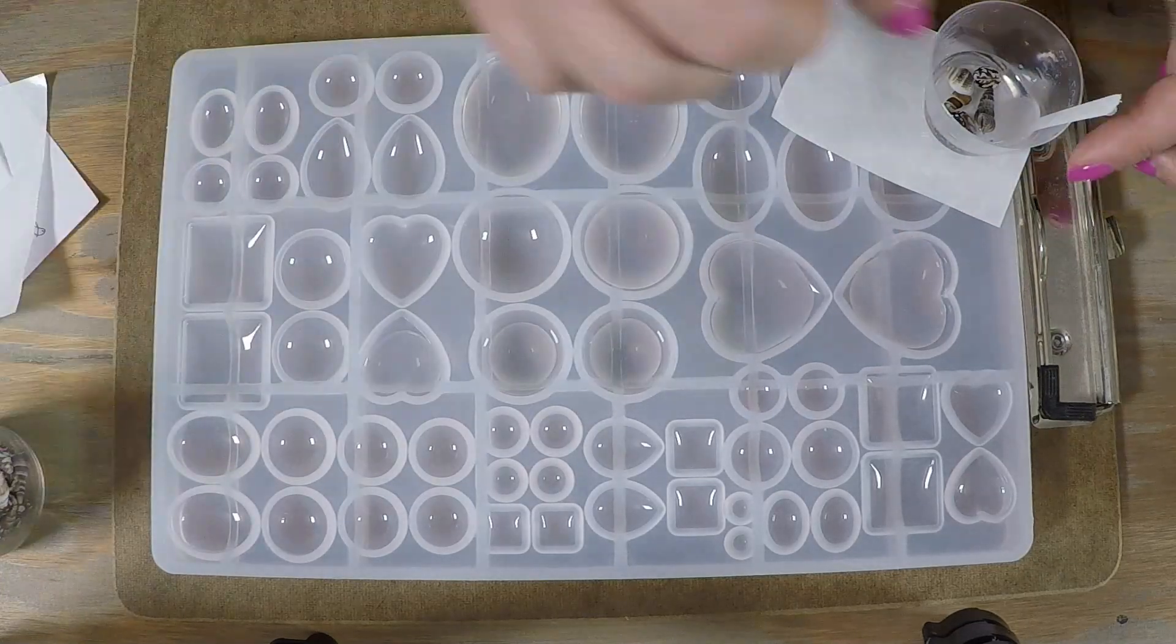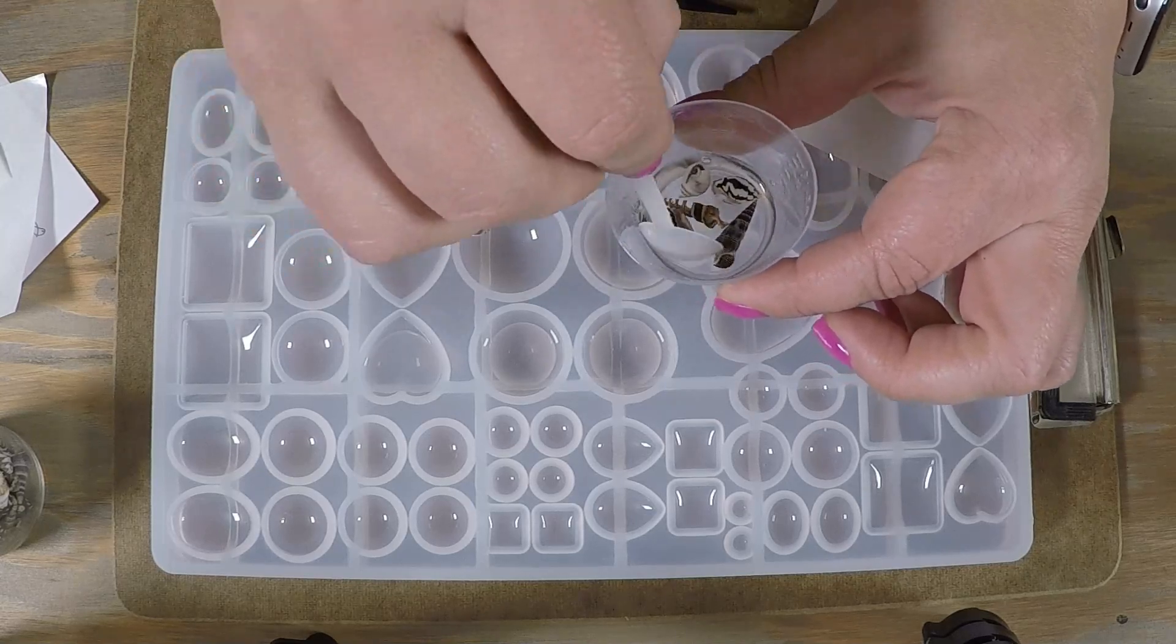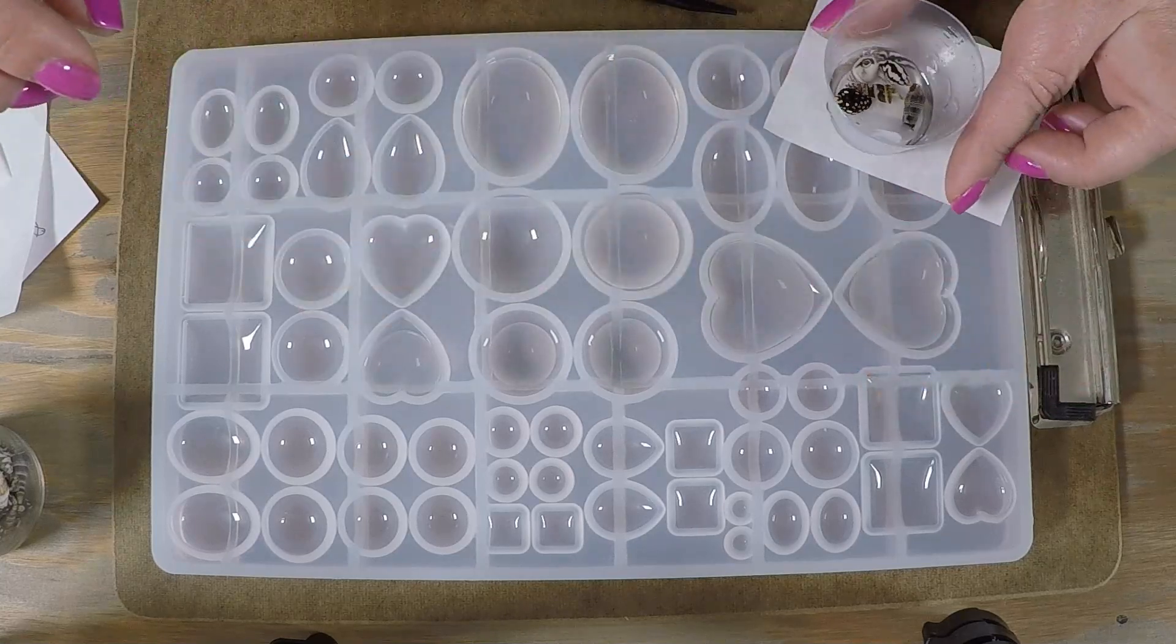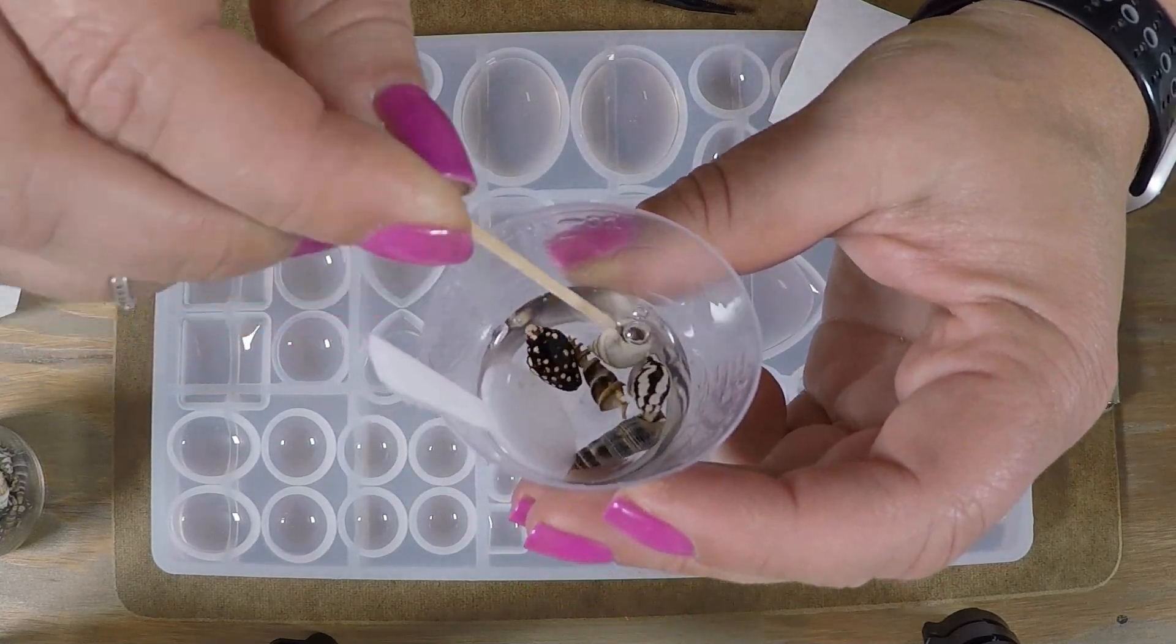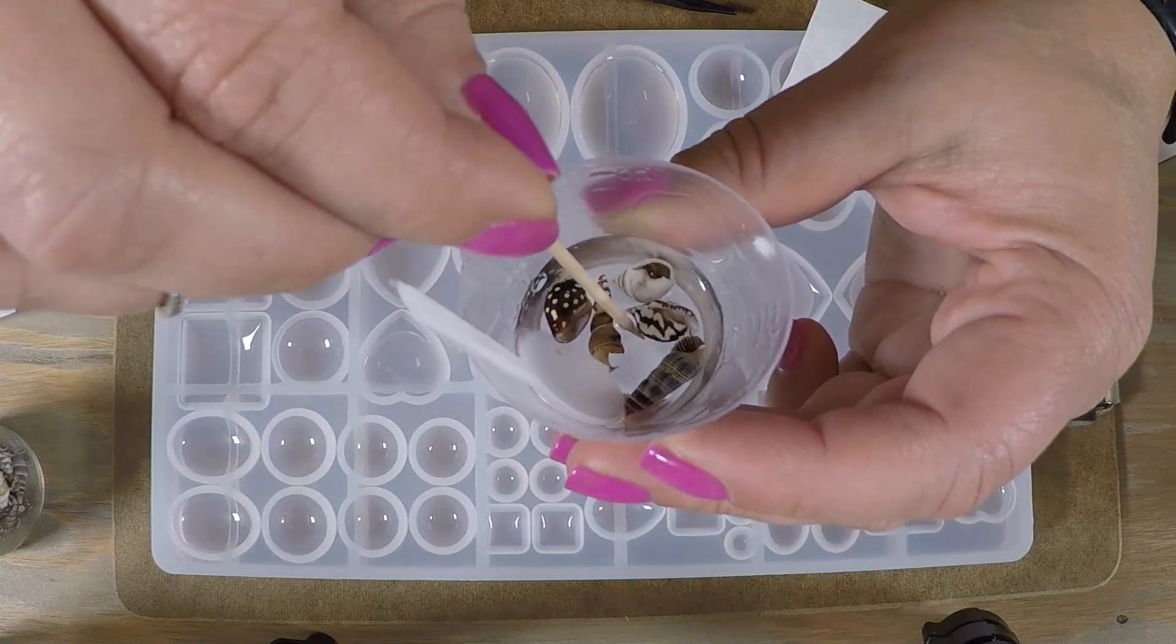This way I can actually get the little air bubbles that form inside the shells out before I put them in the mold. I just keep turning them around and moving them in the resin so that the air bubbles rise to the opening, then I'll take a toothpick and fish those out.